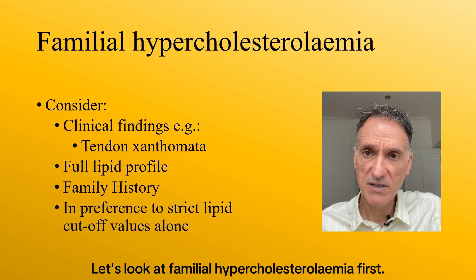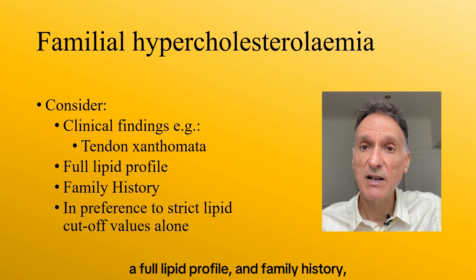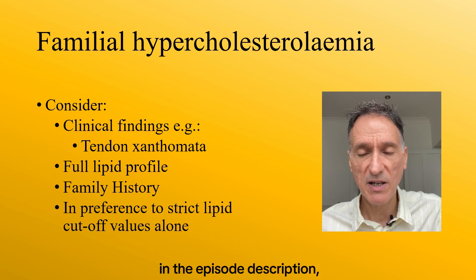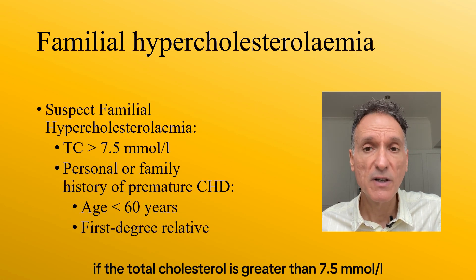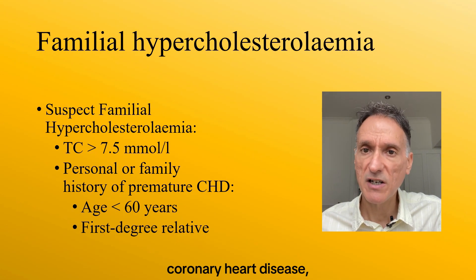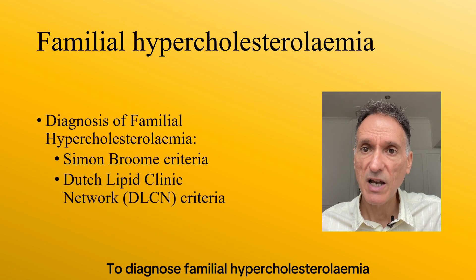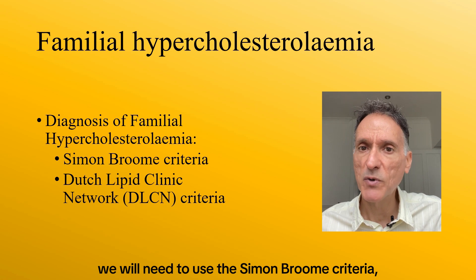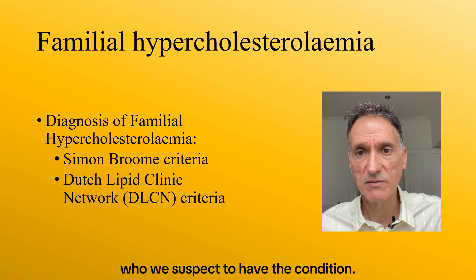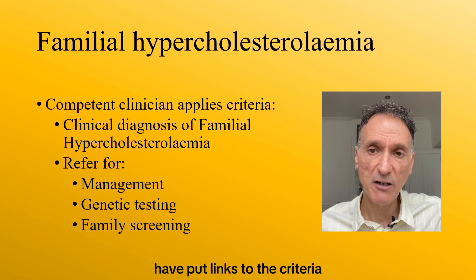Let's look at familial hypercholesterolaemia first. In order to judge the likelihood of a familial lipid disorder, we are advised to consider clinical findings, a full lipid profile and family history, rather than using strict lipid cut-off values alone. In summary, we should suspect it if the total cholesterol is greater than 7.5 mmol/litre, or there is a personal or family history of premature coronary heart disease — that is, an event before 60 years in an index individual or first-degree relative. To diagnose familial hypercholesterolaemia in primary care, we will need to use the Simon Broome criteria or the Dutch Lipid Clinic Network (DLCN) criteria, applied to those we suspect have the condition. This should be done by someone competent in using the criteria, so we should seek advice if necessary.